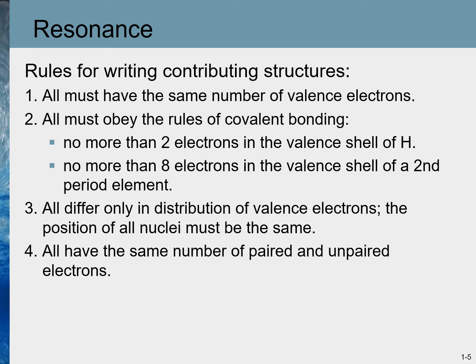When writing resonance contributing structures, we must follow these rules. First, all structures must have the same number of valence electrons. Second, every atom must obey the rules of covalent bonding: no more than two electrons in the valence shell of hydrogen, and no more than eight electrons in the valence shell of second-period elements such as carbon, oxygen, and nitrogen. Third, structures differ only in the distribution of valence electrons — the position of all nuclei must remain the same, and the basic skeletal structure cannot be altered.